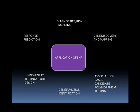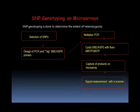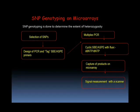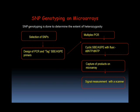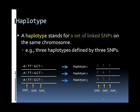Applications of SNP include diagnostic or risk profiling, gene discovery and mapping, association-based candidate polymorphism testing, gene function identification, homogeneity testing or study design, and response prediction. SNP genotyping on microarray is done to determine the extent of heterozygosity. The steps include selection of SNPs, design of PCR and tag primers, multiplex PCR, cyclic SBE or ASP with fluorescent dNTPs, capture of products on microarray, and signal measurement with a scanner.